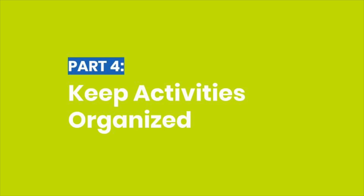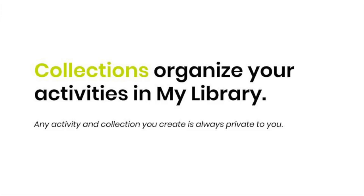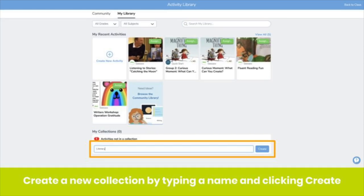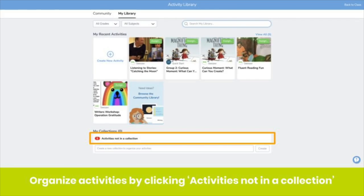We have a few tips for keeping your activities organized. All your saved and created activities get stored in My Library, shown in the order they're saved or created, which can make it hard to find what you need quickly. Collections help you organize your activities so you can find them and assign them more easily. Remember, any activity or collection you create is always private to you. When you're in My Library, scroll to the bottom where you'll see My Collections. Create a new collection by typing the name and clicking Create. Organize activities that aren't in a collection yet by clicking Activities Not in a Collection.